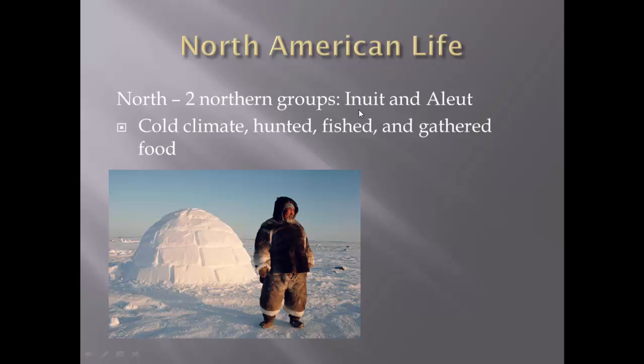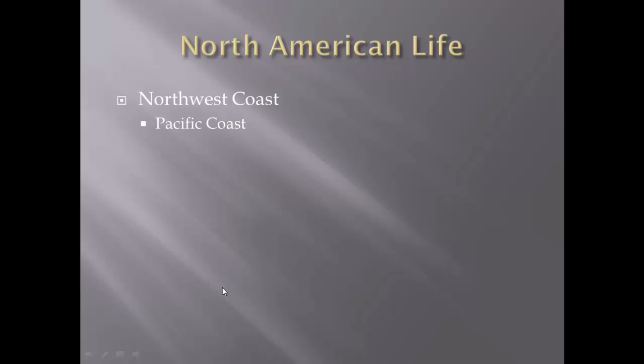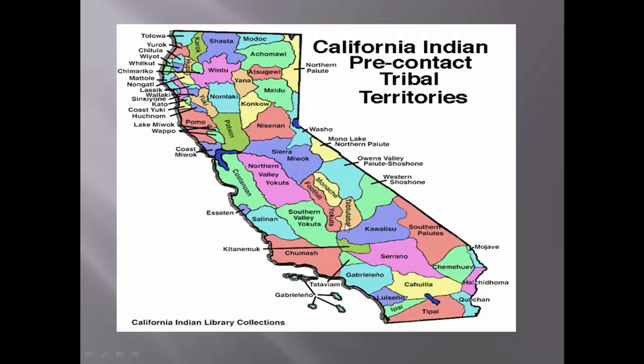North American life continued. In the north, the two northern groups would be the Inuit and the Aleut — you may refer to these as Eskimos. It's a very cold climate; they hunted, fished, and gathered food to live in that geographic environment. Along the northwest coast, out where California is today on the Pacific coast, you're going to fish. All the different Native American groups in and around that Pacific coast catered to their geography, whether in colder climates up in northern California or warmer down in SoCal by San Diego.